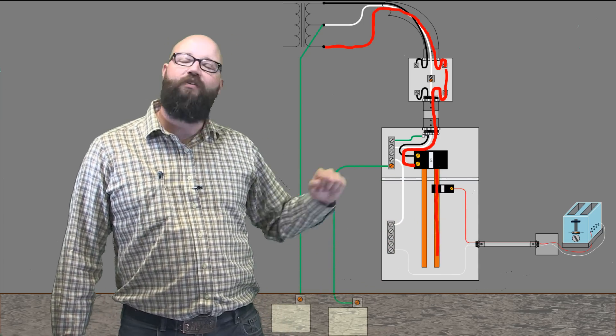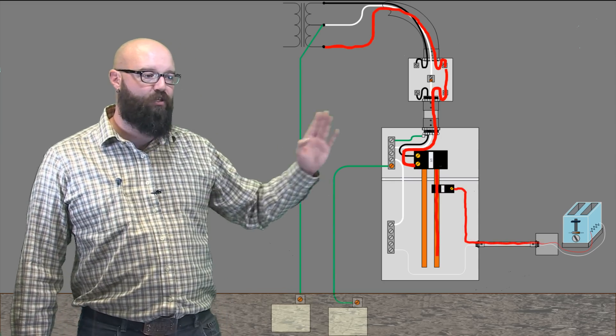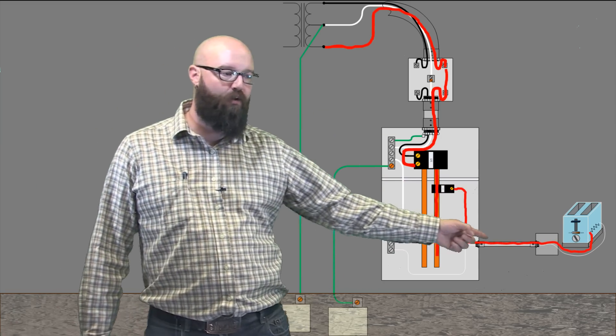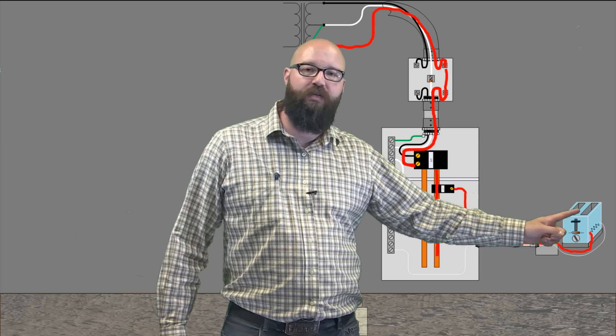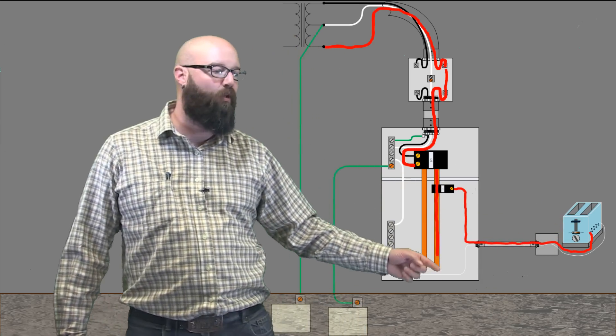And as soon as it's turned to the on position, we have current flow down to our load, where I've got it represented as just a resistor. It's a toaster, so it's just a resistive load.